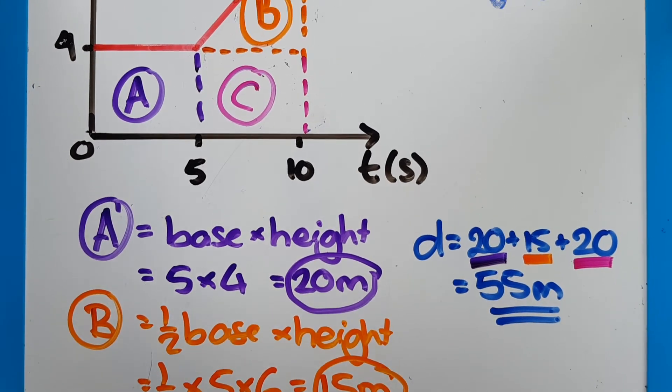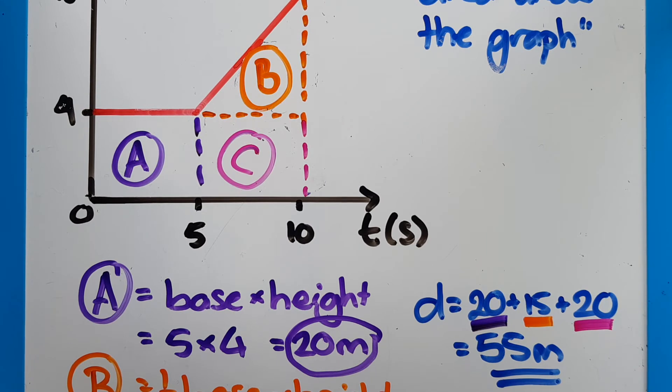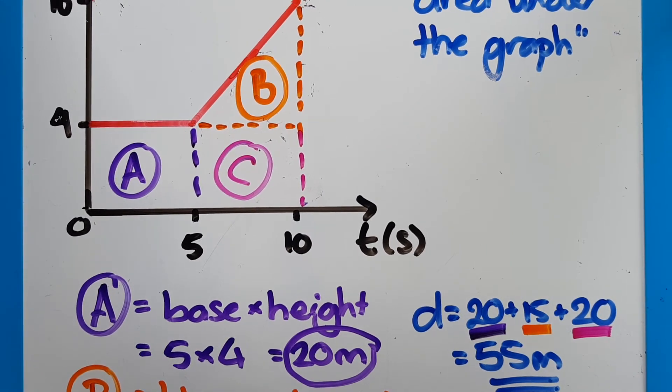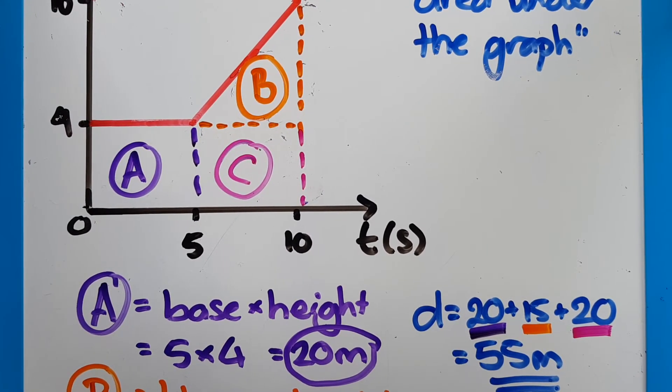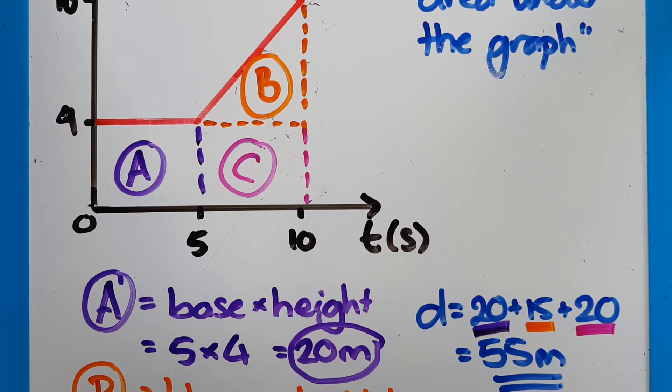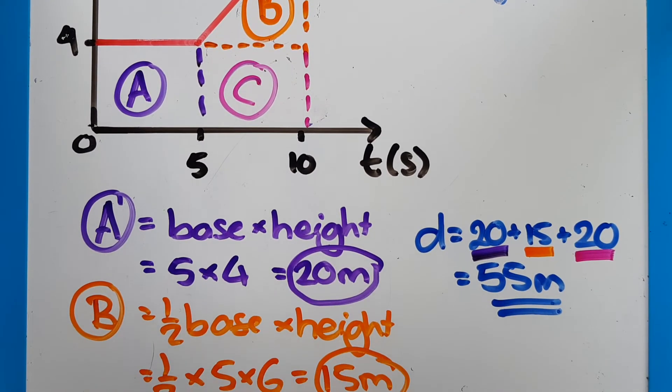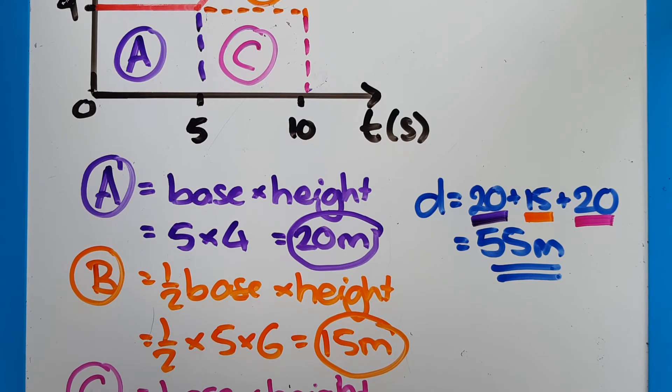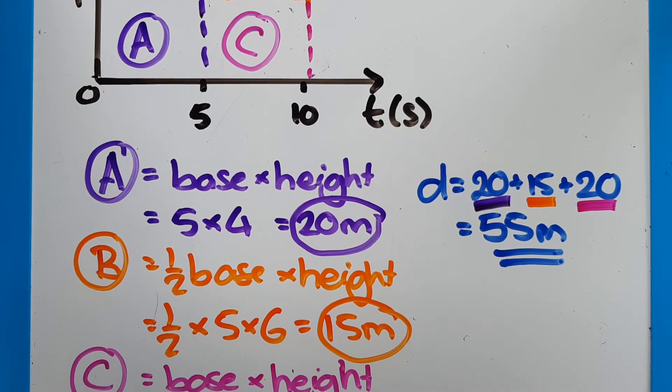Now the next section is a bit harder because it's B and C combined. Well B is my triangle, and that is going from four to 10 for its height, which is six meters per second. And it's going from five seconds to 10 seconds. So five seconds is the base. So half times the base times height. So half times five times six, which is 15 meters.